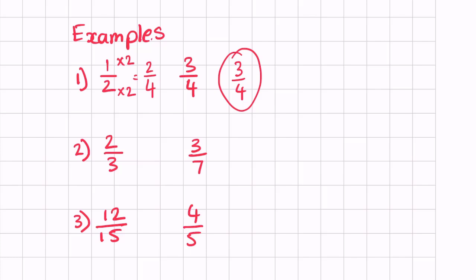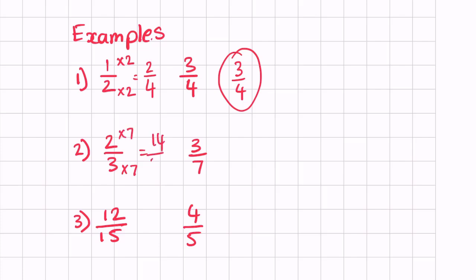Next we have two thirds and three sevenths. In this case we have three and seven as denominators, and because they are prime numbers you can multiply each fraction by the opposite denominator. So two thirds we multiply by seven, which gives us 14 over 21, and three sevenths we multiply by three, which gives us 9 over 21.